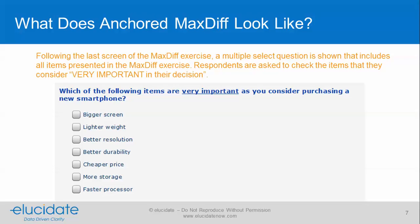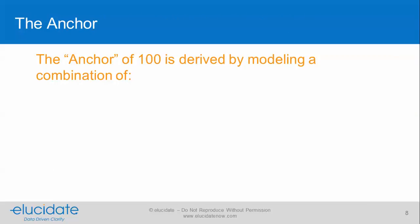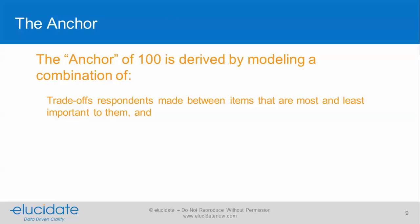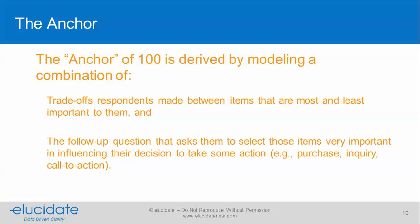What about absolute importance? Anchored MaxDiff takes a question like this. Following the last screen of the MaxDiff exercise, a multiple-select question is placed that includes all the items presented in the MaxDiff exercise. Respondents are asked to check the items that they consider very important in their decision. What we get is an anchor of 100, derived by modeling a combination of the trade-offs that respondents made between the items that are most and least important to them, and that follow-up question asking them to select items that are very important in influencing their decision to take some action.